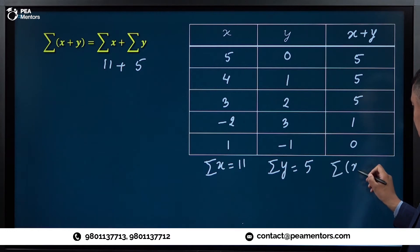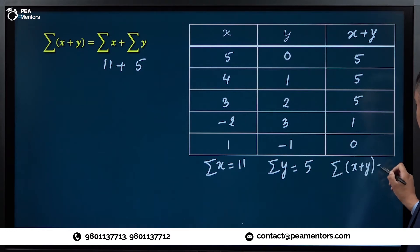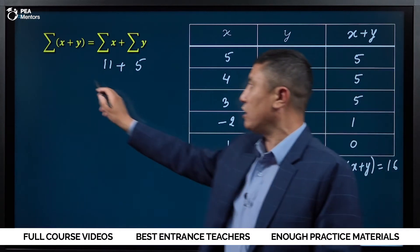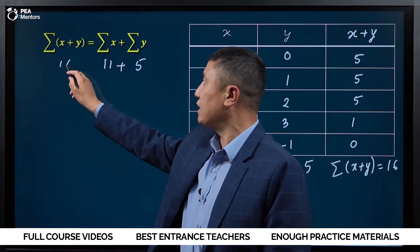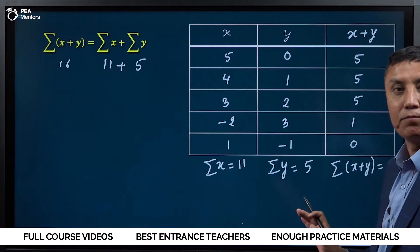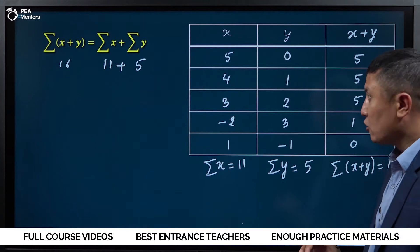Summation of x plus y is 16. 16 is equal to 16 — perfect, you can verify it.